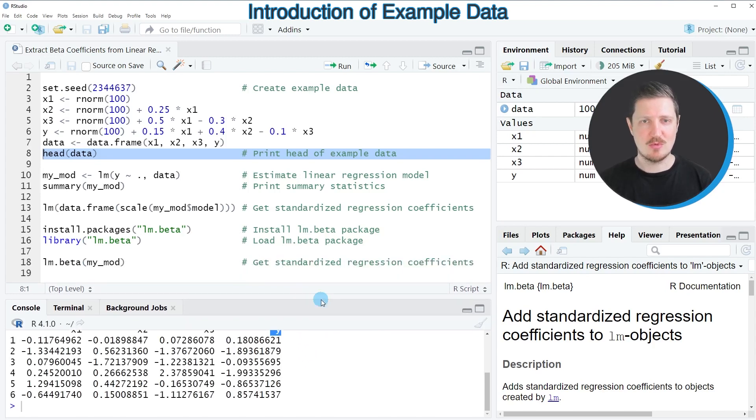Now let's assume that we want to estimate a linear regression model based on these data, then we can apply the lm function as you can see in line 10 of the code and within the lm function I specify my target variable and then I specify that I want to use all the other variables in my data frame data as predictors.